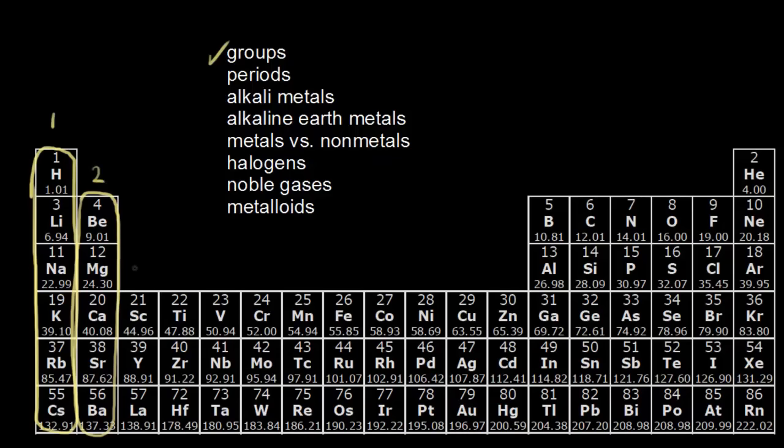I can continue labeling my groups. This would be group three, four, five, six, seven, eight, nine, ten, eleven, twelve. Then I go back up to here and I can see I have another vertical column. So group thirteen, fourteen, fifteen, sixteen, seventeen, and finally eighteen. So that's one way to number your groups.